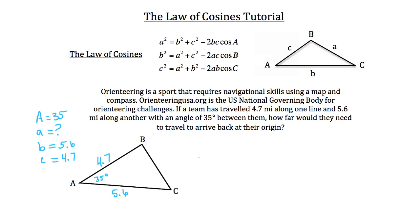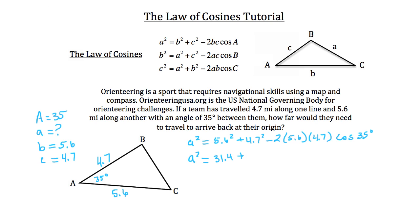Side length a squared is equal to side length b squared, which is 5.6 squared, plus side length c squared, which is 4.7 squared, minus 2 times side length b times side length c times the cosine of angle A — in this case 35 degrees. So a squared equals 5.6 squared, roughly 31.4, plus 4.7 squared, roughly 22.1, minus 2 times 5.6 times 4.7, which is roughly 52.6, times the cosine of 35 degrees. Do all that work on the right-hand side in your calculator, and you find it all comes out to approximately 10.4.